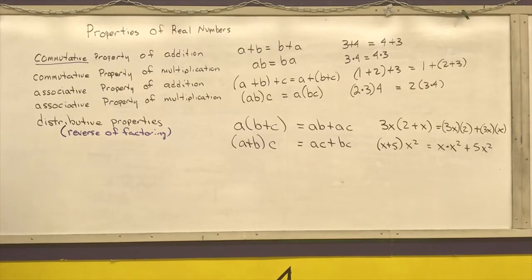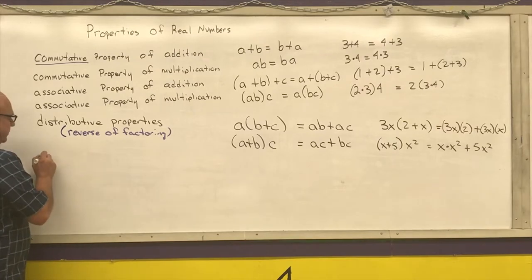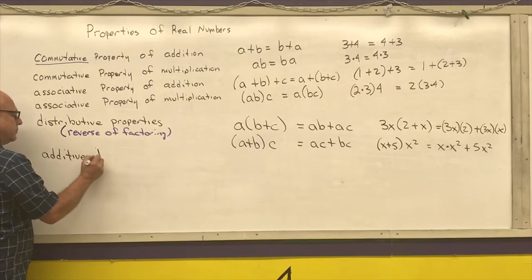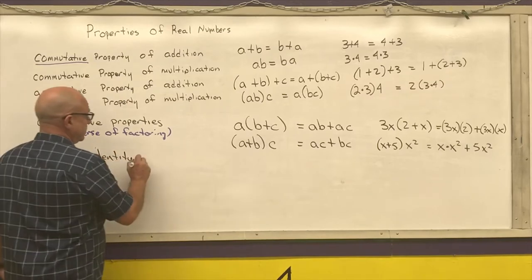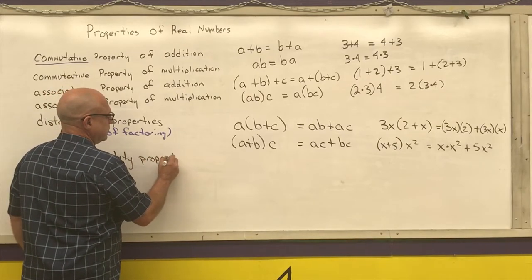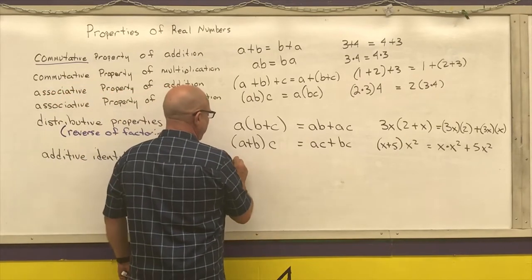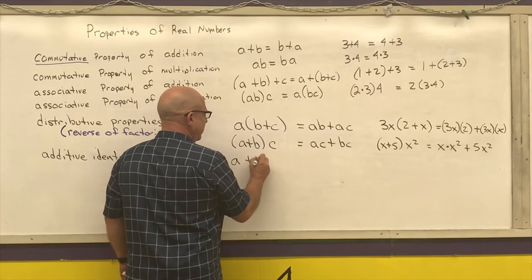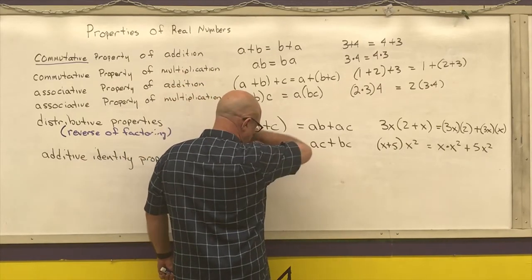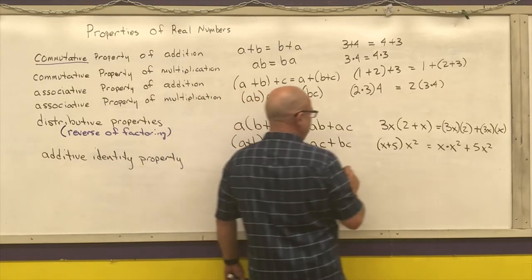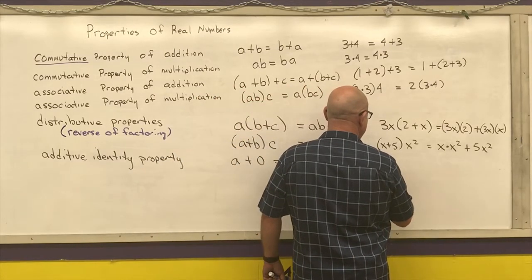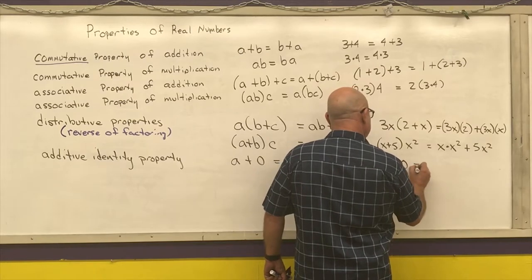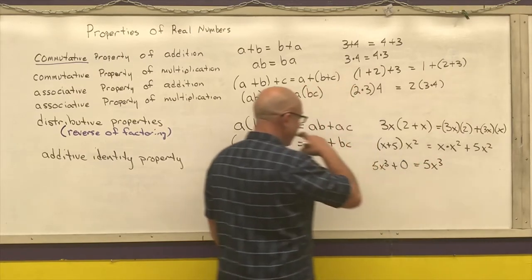Next, we have our additive identity property. That says any number plus 0 gives us our original number. An example would be 5x cubed plus 0 gives me back my original number.